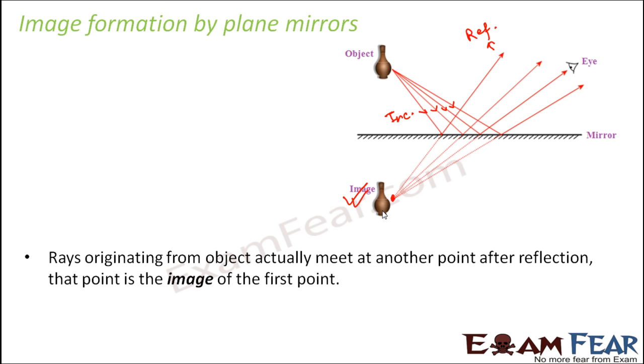If there is no reflection happening, there will be no meeting of the reflected rays and there will be no image formation. That is why it is very important for the phenomenon of reflection of light to take place in order to see the image of an object. This is the basic concept of image formation.